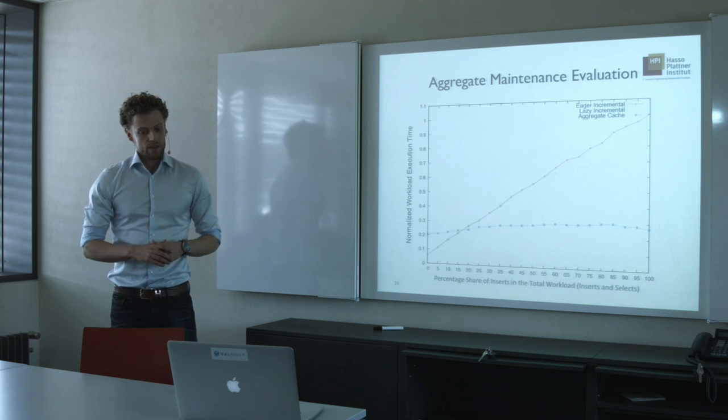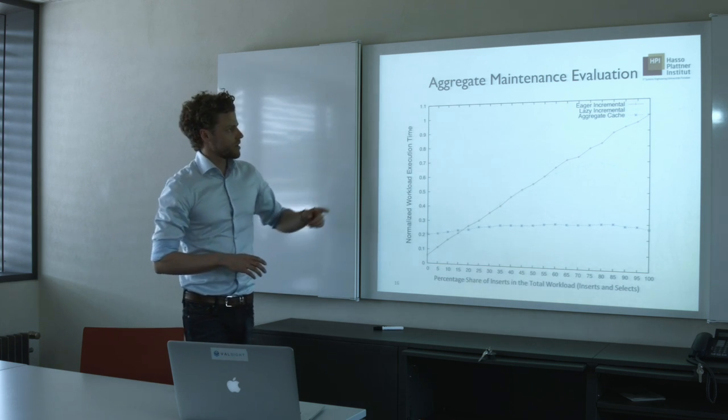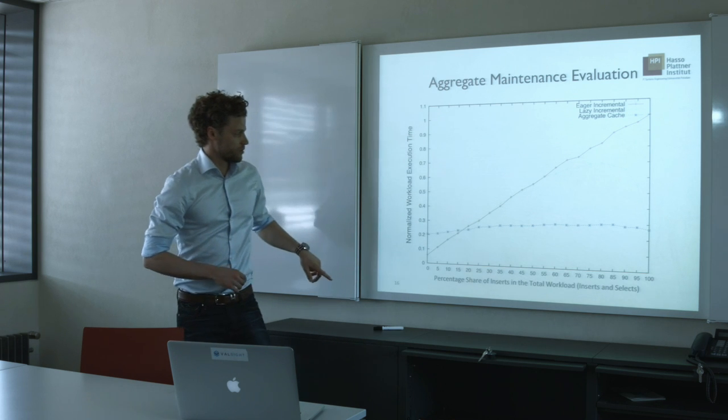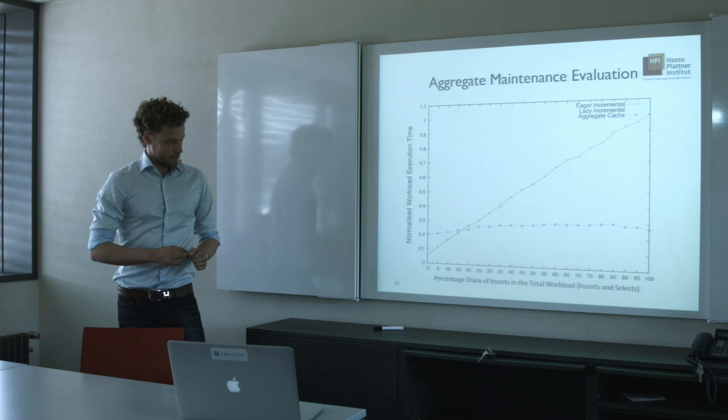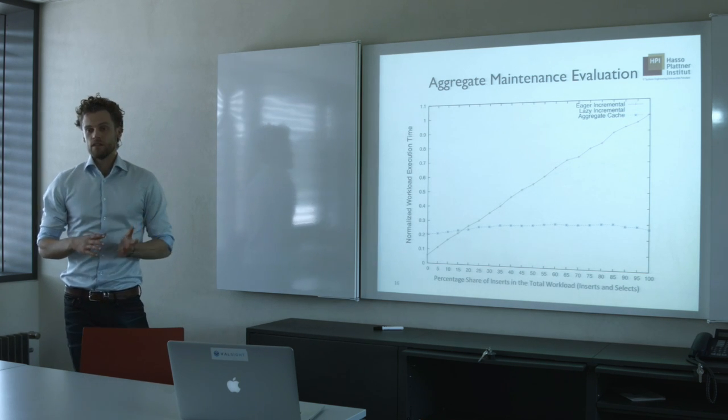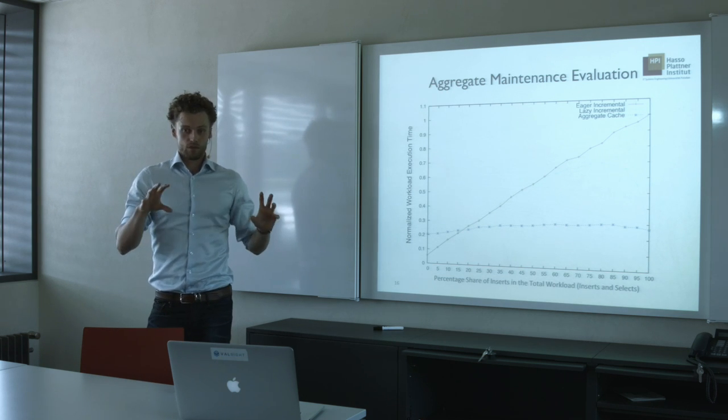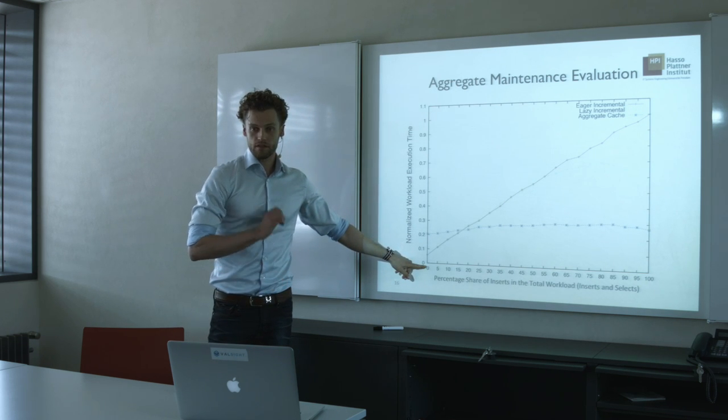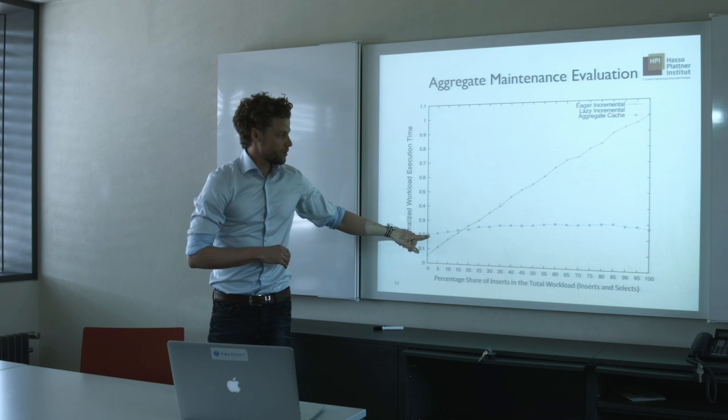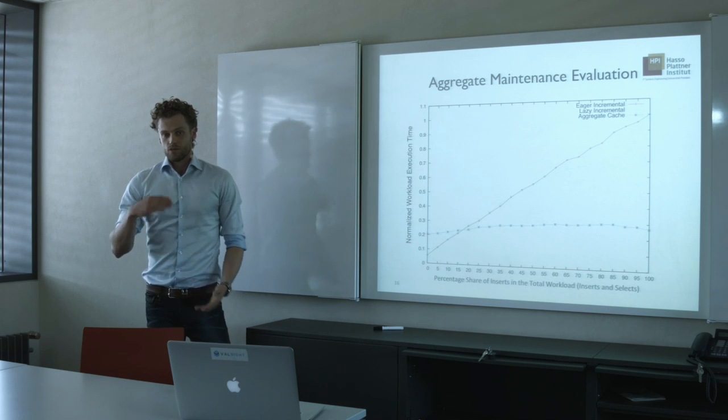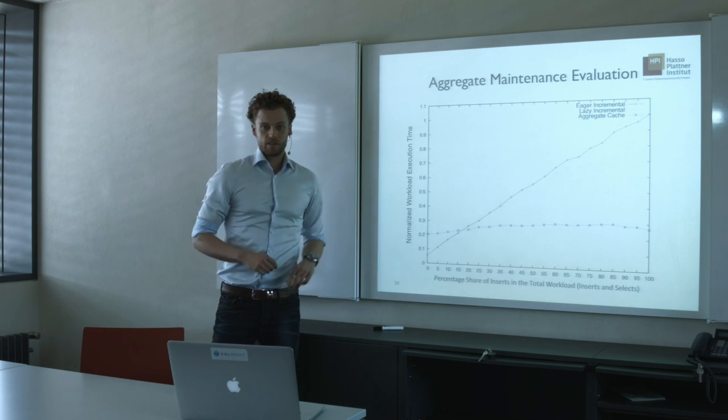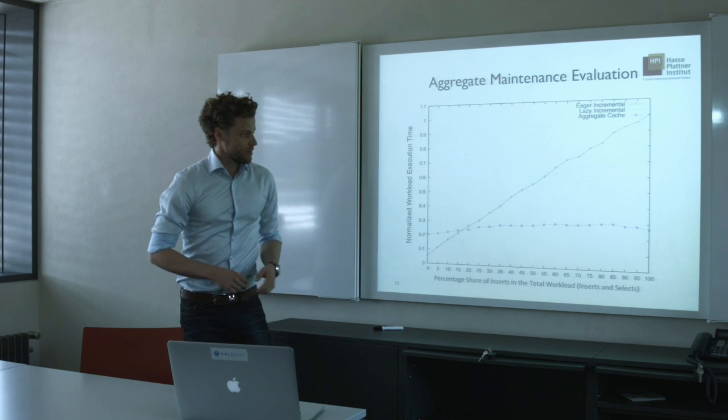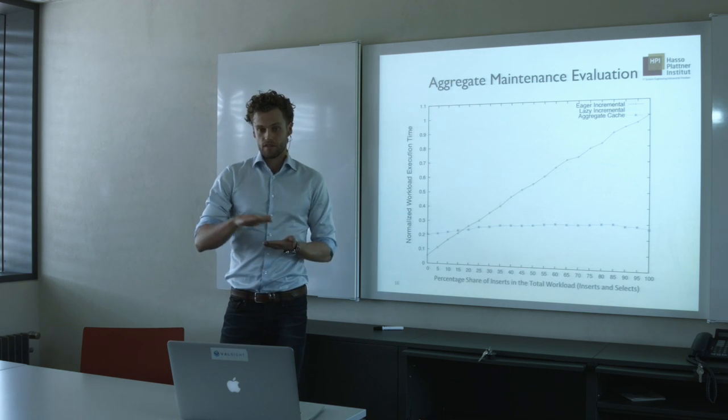So this is the first evaluation regarding the maintenance, aggregate maintenance strategies. As I said earlier, we have this eager incremental and lazy incremental strategy which are red and green, and aggregate cache which is blue. And what we varied here on the x-axis is the percentage share of inserts in the total number of statements of the total workload, which are combined of inserts and selects. So on the far left, you only have selects to an aggregate, so no updates to an aggregate, which is why it performs slightly worse because accessing a tuple of a materialized view is always faster than doing the delta compensation which I've just explained. But as soon as we have a couple of inserts, those strategies perform worse and we are pretty much stable, just a slight increase.